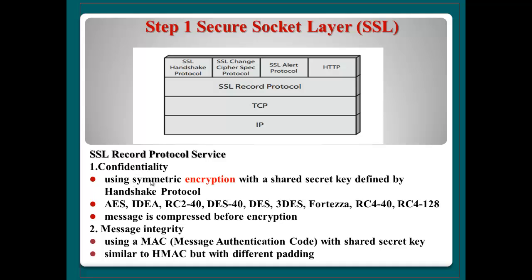For confidentiality, the message is first compressed before encryption. Second, message integrity: normally message integrity uses MAC — message authentication code — with a shared secret key. This integrity is similar to HMAC, but the padding method is different from HMAC.